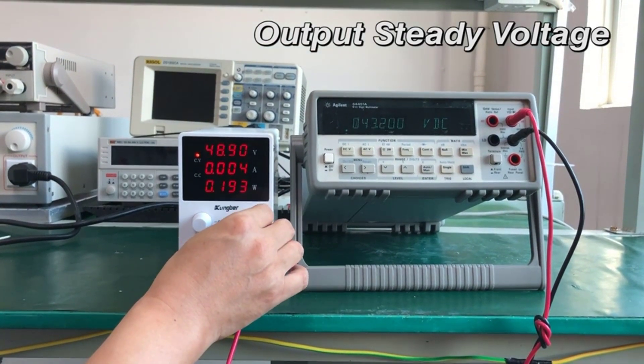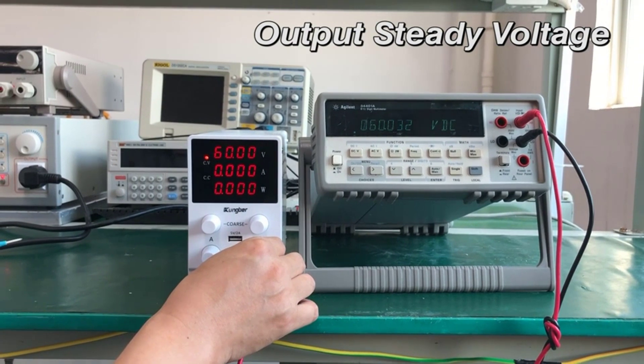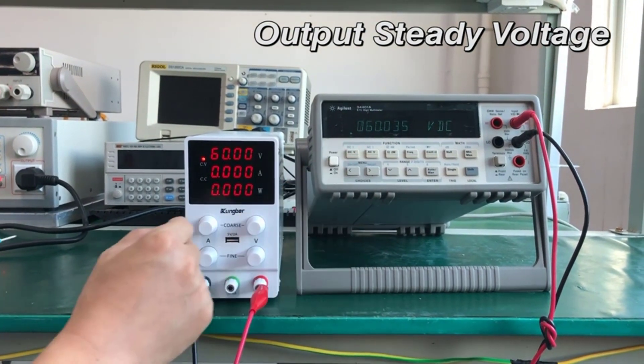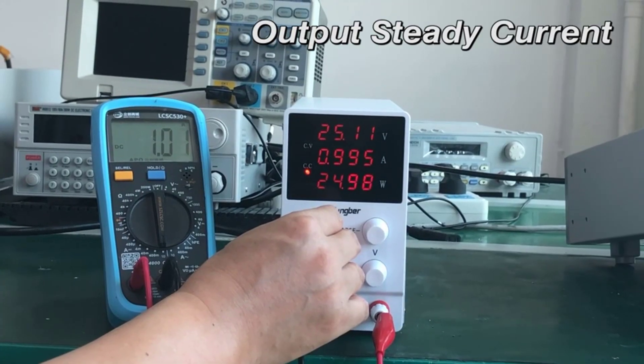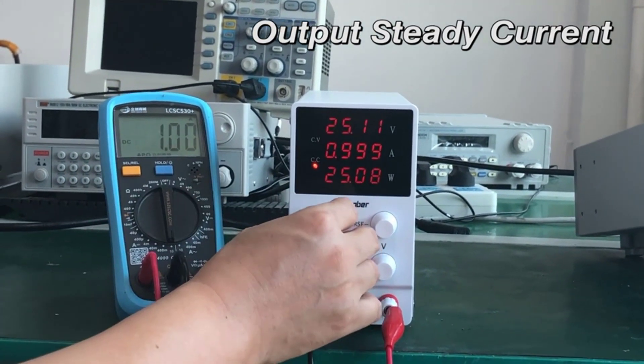The display module consists of three sets of four-digit LED display to display voltage with a resolution of 0.01V, current with a resolution of 0.001A and power with a resolution of 0.1W.